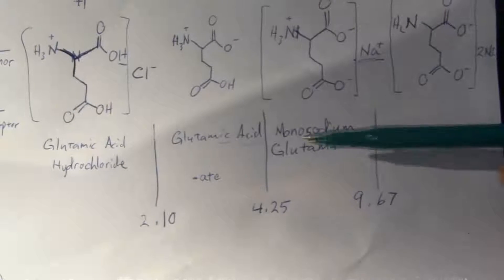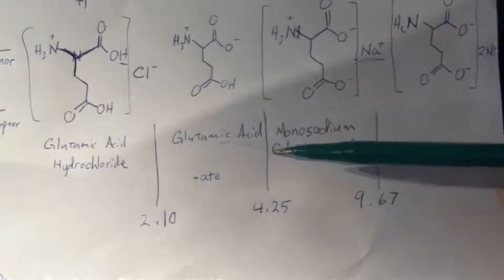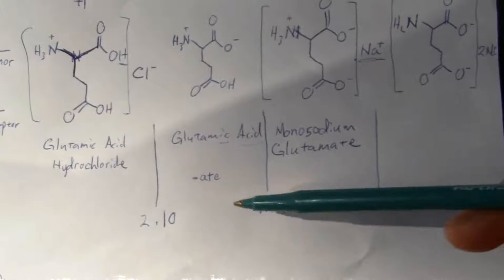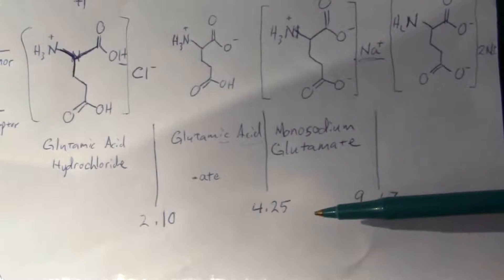Monosodium glutamate and glutamic acid are essentially equivalent. The only difference is what kind of environment they're in.